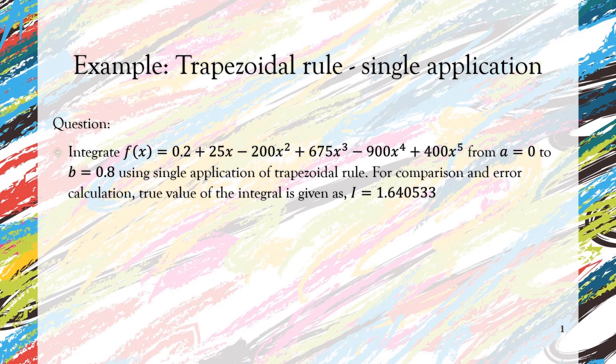So the boundary is a to b, 0 to 0.8, using single application of trapezoidal rule. For comparison and error calculation, the true value of the integral is given as I = 1.640533. We'll be using this true value to calculate the true error and the percentage true error.